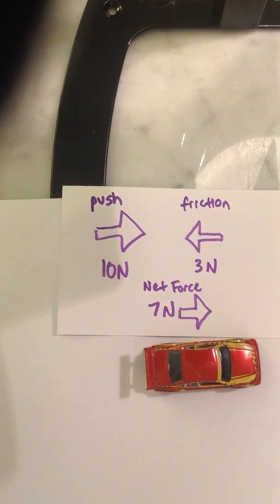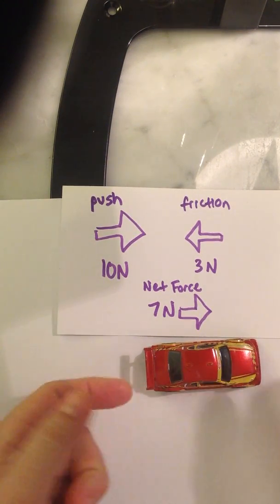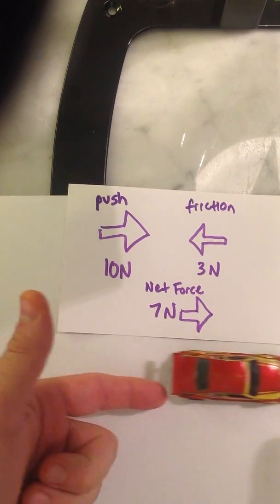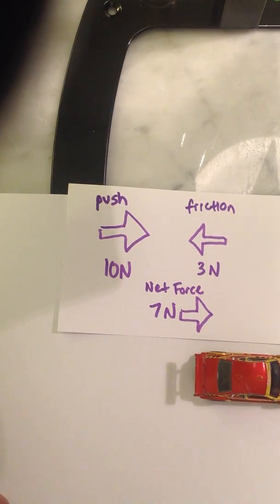Okay, I wanted to come back to one more thing real quickly. I mentioned earlier that if I push this car with 10 newtons of force this way, the car will roll forward, and then eventually, though, friction will stop it.